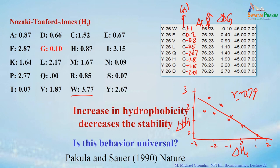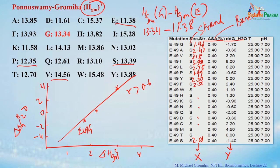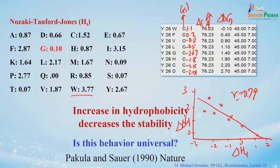So for a buried mutation, we see a direct relationship between hydrophobicity and stability. But for a mutation at the surface in the coil region, you see an inverse relationship between stability and hydrophobicity. This was first reported in 1990 — that hydrophobicity has an inverse relationship with stability for this particular protein — and was published in Nature.